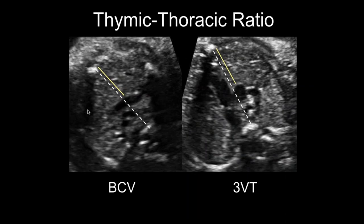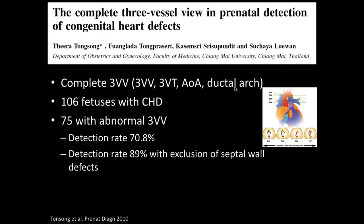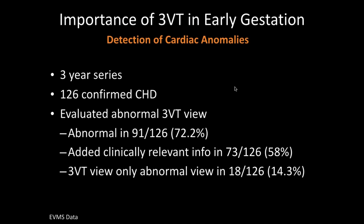Briefly, I want to mention the thymic-to-thoracic ratio described by Dr. Chawi, measured from the dome of the ascending aorta or aortic isthmus to the sternum divided by the chest measurement from spine to sternum. Babies with small thymus glands due to DiGeorge syndrome will have abnormalities in that ratio. We also use the brachiocephalic ratio internally, since the brachiocephalic vein is more constant in these babies than the aorta, which may look abnormal in conotruncal anomalies. A study from Thailand showed the three-vessel trachea view is abnormal in approximately 70-75% of fetuses with congenital heart disease, and excluding ventricular septal defects, the detection rate approaches 90%.